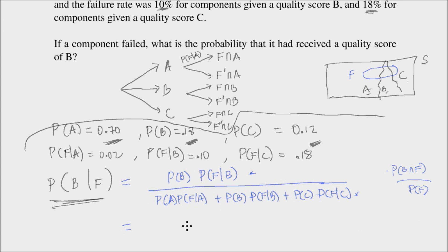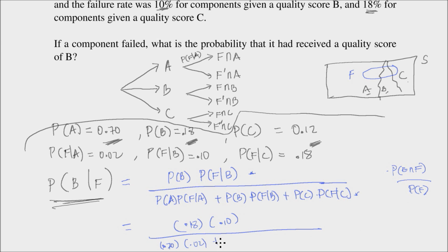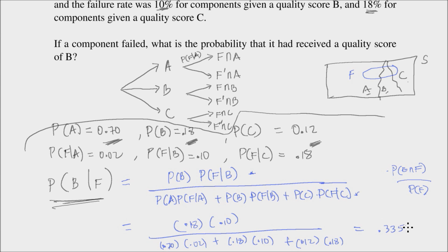P(B) is 0.18 times P(F | B) = 0.10, divided by 0.70 times 0.02, plus 0.18 times 0.10, plus 0.12 times 0.18. That gives a value equal to approximately 0.3358. That answers the question.